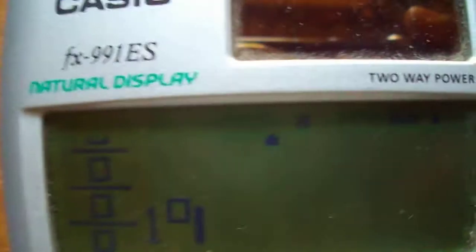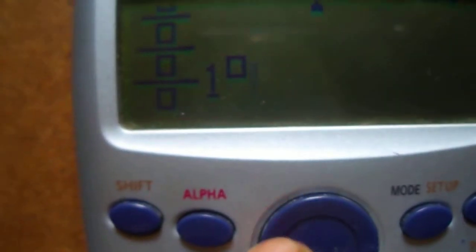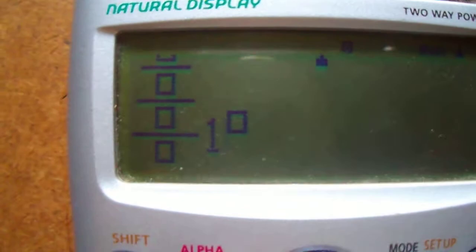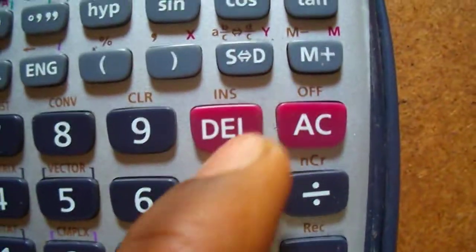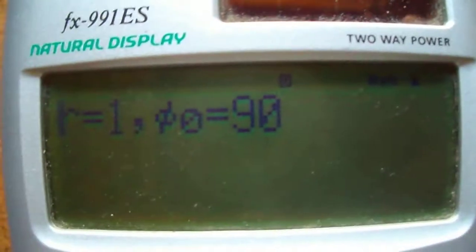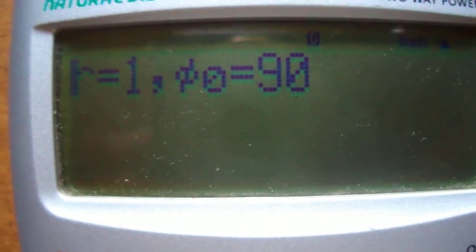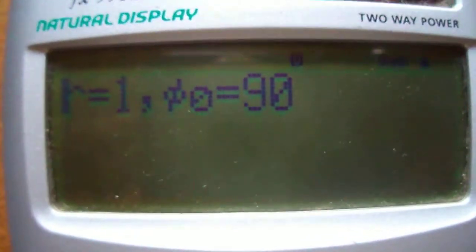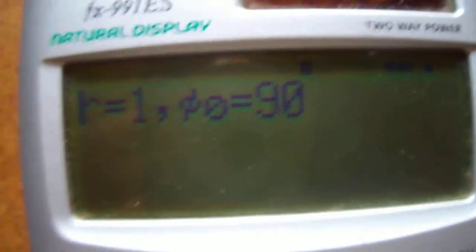Now press AC then press the left arrow button. Using the left arrow button press it two times so that you come here. Then press the delete button. If you are not getting this on the screen, that means this trick doesn't support your calc.